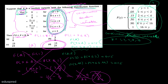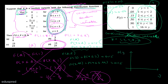Similarly, y कोई भी value नहीं लेगा 4 और 8 के बीच में, क्योंकि F(4), F(5), F(6) सब 0.50 हैं। y ने 4 लिया और 8 भी लिया, लेकिन बीच में कोई value नहीं ली। तो y की possible values सिर्फ 1, 2, 4, 8, और 16 हैं — यानी y एक discrete random variable है। इसे तुम graphically भी सोच सकते हो।